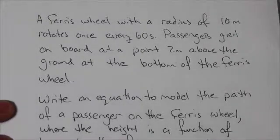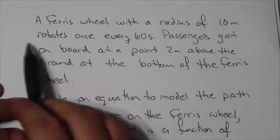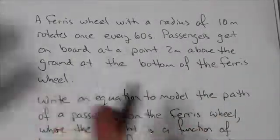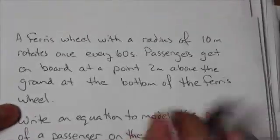Hi everyone. We're going to take a look at a trig word problem here. A Ferris wheel with a radius of 10 meters rotates once every 60 seconds. Before we read anything else, we're just going to stop right there for a quick second.